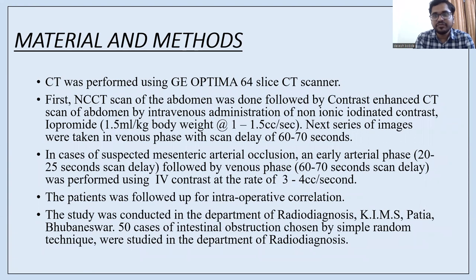For materials and methods, CECT was performed using a GE Optima 64-slice CT scanner. First, a plain CT scan of the abdomen was done, followed by a contrast-enhanced CT scan of the abdomen by intravenous administration of non-ionic iodinated contrast. Iopromide was given at a rate of 1.5 mL per kg body weight at 1-1.5 cc per second. Series of images were taken in venous phase with scan delay of 60-70 seconds.